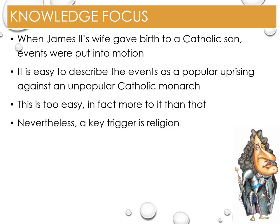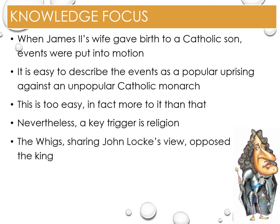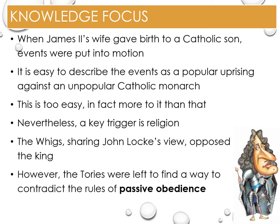Nevertheless, it cannot be denied that religion was a key trigger for these events. However, being a trigger does not make it the most important reason. For the Whigs, promoting John Locke's view of a constitutional monarchy with a strong and powerful parliament limiting the power of the king was at the forefront, and the religious issues were used to promote that. For the Tories, however, unlike the Whigs who were against powerful monarchy, they supported monarchy and had to find a way to contradict their belief in passive obedience - the unquestioning obedience to the authority of a monarch, even when the monarch abuses that power.